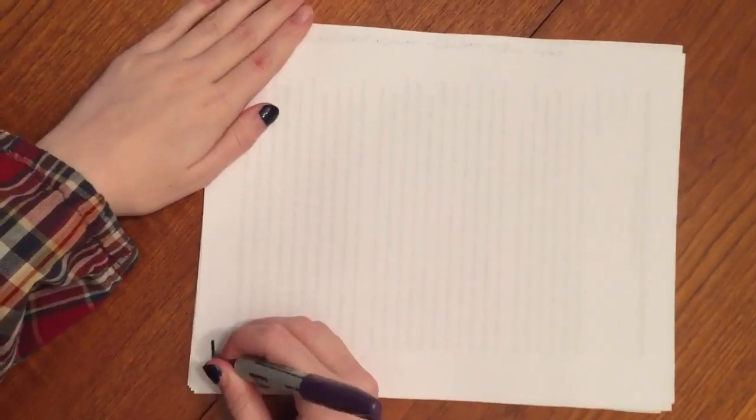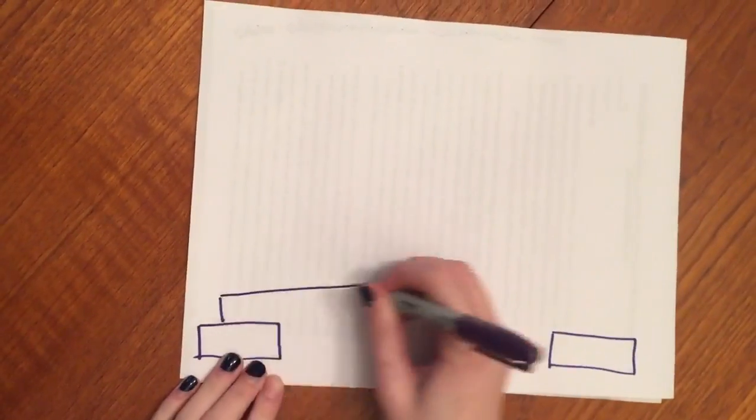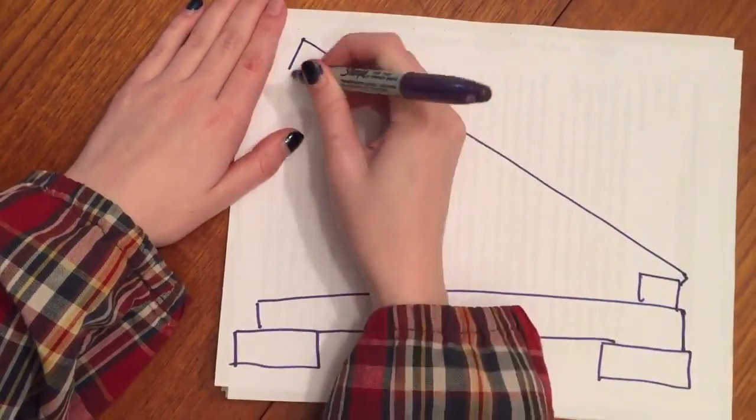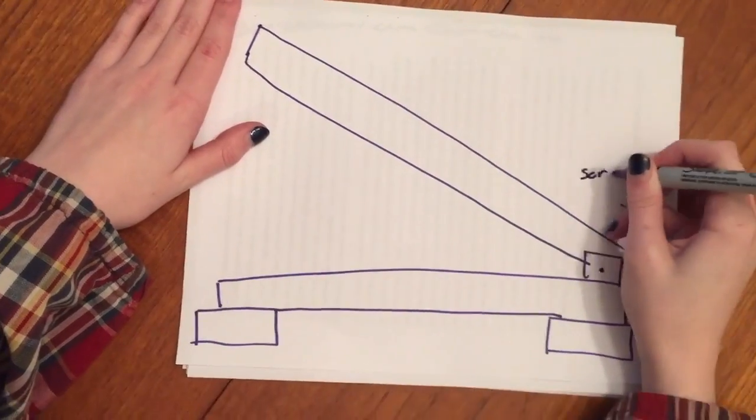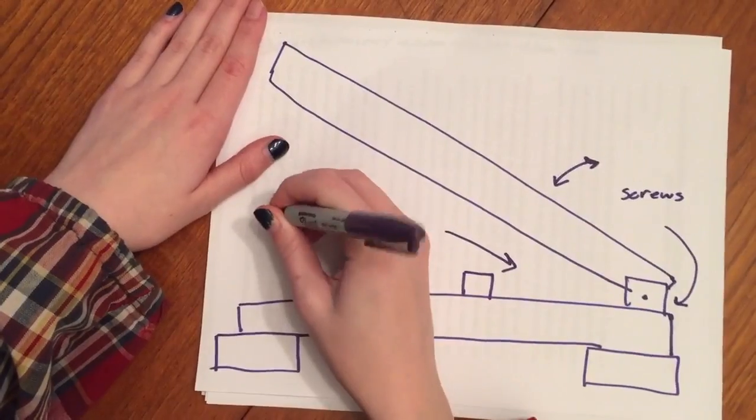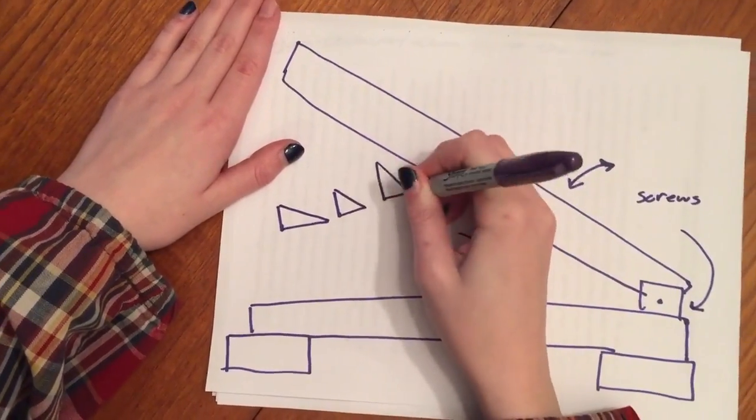While building our catapult we decided to change our design. We also took away a layer of wood from the bottom as we thought it was not needed. At the base we had a block with screws in it that acted like a hinge and then we put a block of wood in front for support. We had three different angle blocks.